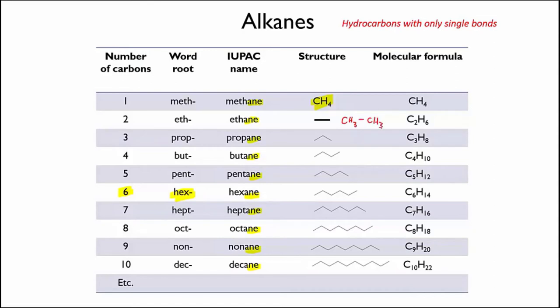Fourth, look carefully at the molecular formula for each of these compounds. Can you see a pattern? Pause the video and see if you can work out an algebraic way to write it down. For instance, if you have an alkane with N carbons, what would its molecular formula be? Well, the pattern is that for N carbons, an alkane molecule must have 2N+2 hydrogens. This is because there are two hydrogens on every carbon, but the two end carbons have an extra one each. So that's alkanes.